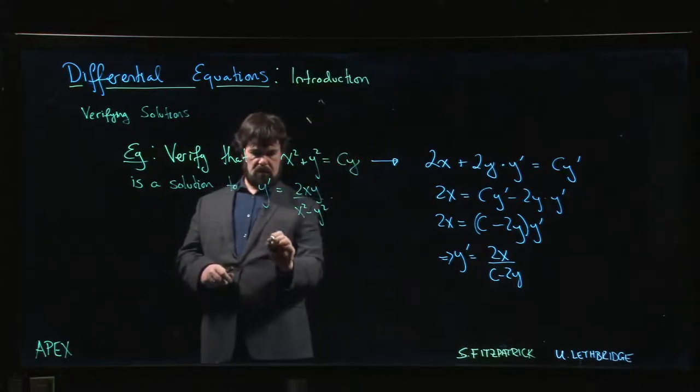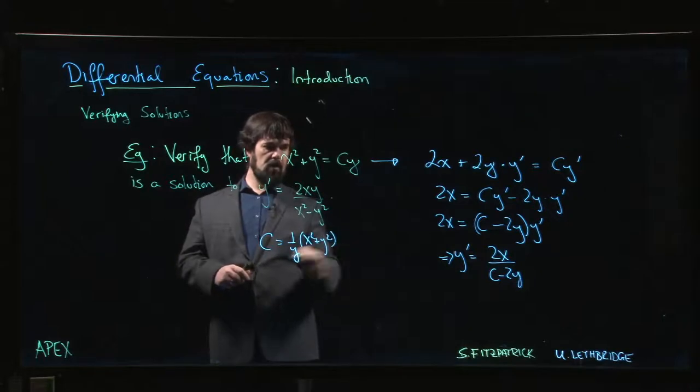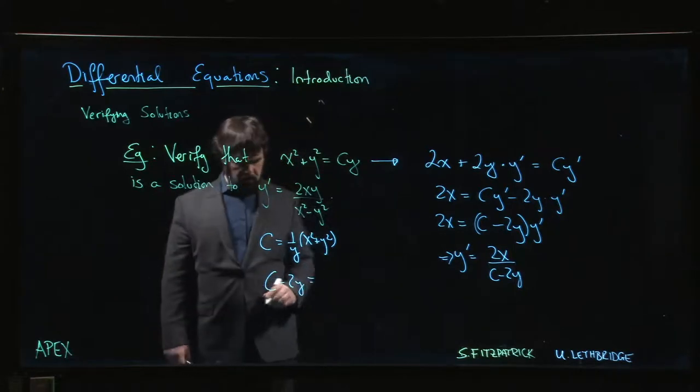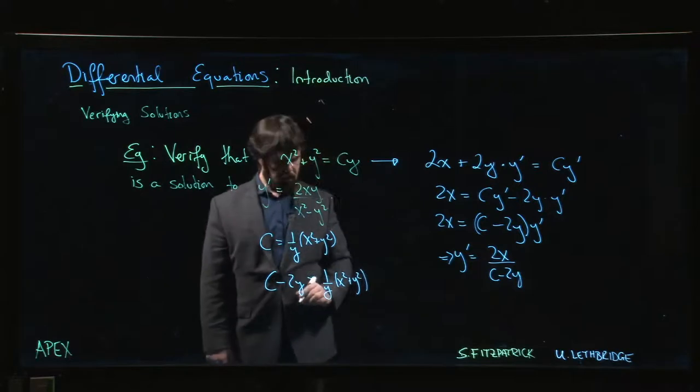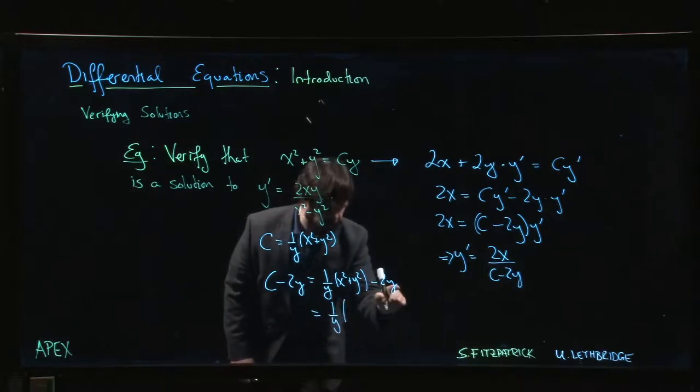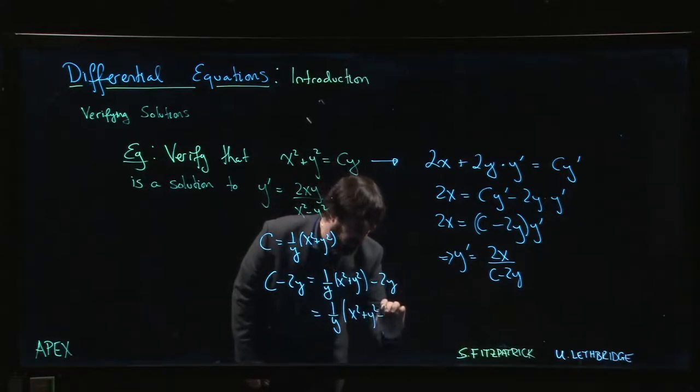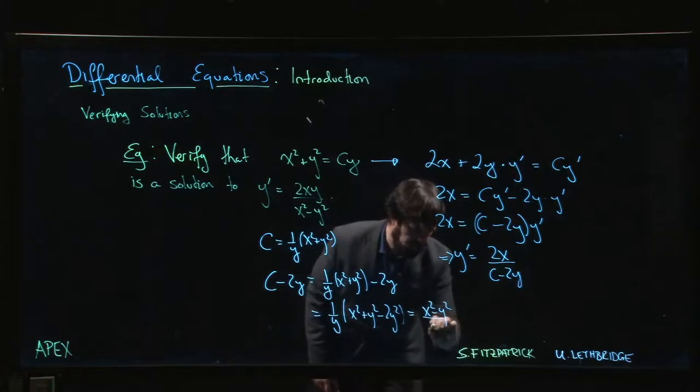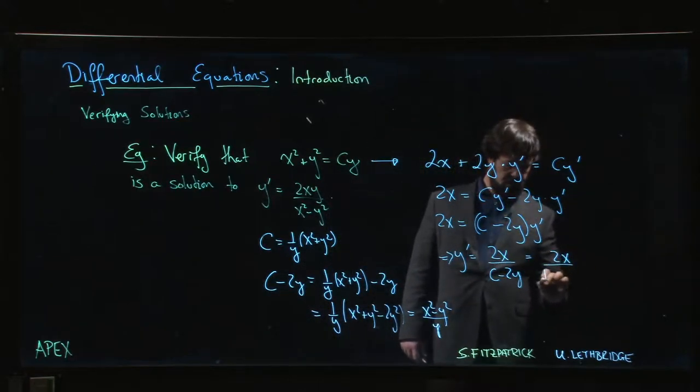c is 1 over y times x squared plus y squared. So c minus 2y would give me 1 over y times x squared plus y squared minus 2y. Multiply top and bottom by y, we get x squared plus y squared minus 2y squared over y. This becomes x squared minus y squared over y.